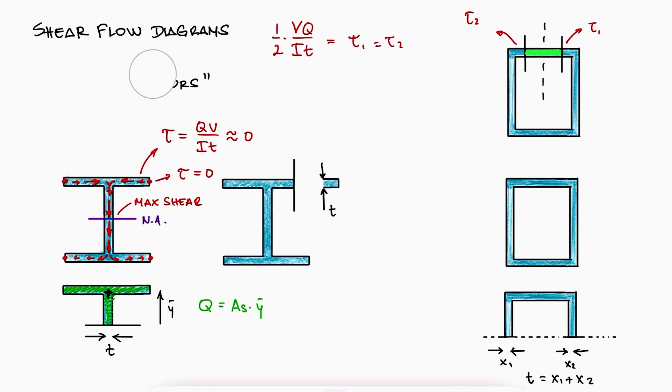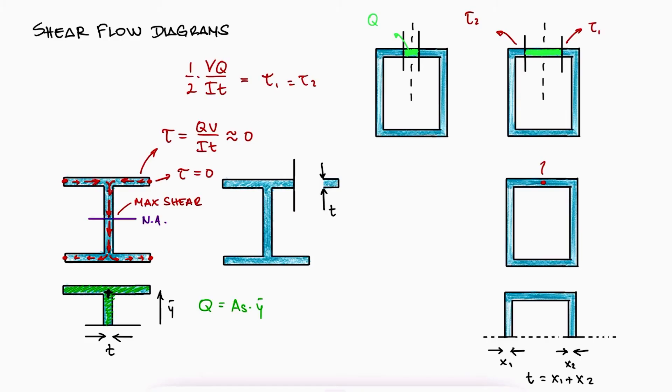The closer we get to the center at the top with our cuts, the smaller Q is gonna be, and therefore we see that the shearing stress approaches zero there. Since the maximum shearing stress is found once again at the neutral axis, we would find a shear flow schematic with increasing vectors from the top center to the neutral axis.